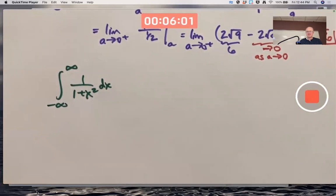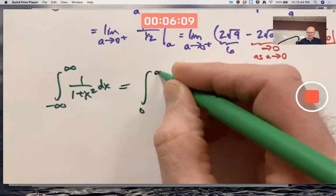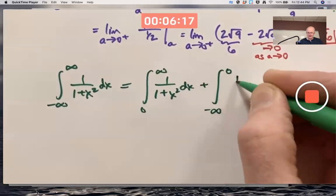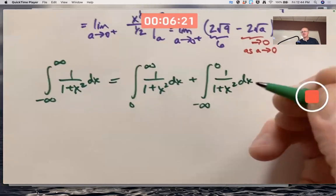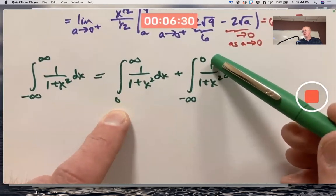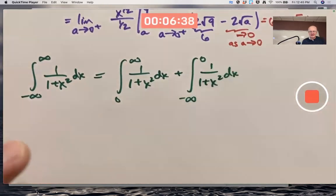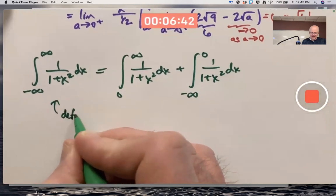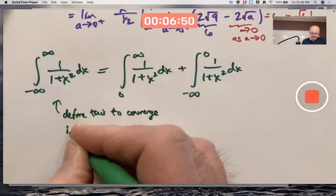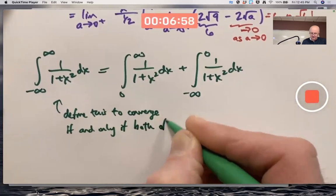So instead, what we do is we say this improper integral converges if and only if two other improper integrals converge. This one and this one. Using the 0 there is actually kind of arbitrary. As long as I'm consistent, I could use a 7 in both spots, or a negative 33 in both spots, or positive pi squared in both spots. It doesn't matter.